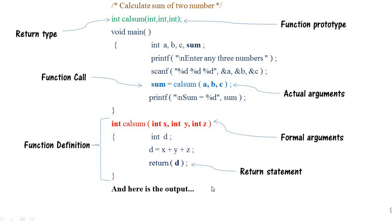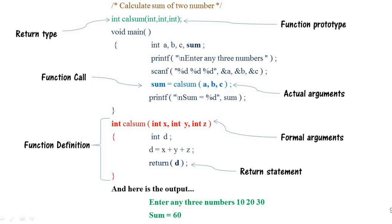Let's see the output. The program prompts: 'Enter any three numbers.' The user enters 10, 20, 30, and the output is: 'Sum is equal to 60.' This statement is printed from the `void main` function. This is the structure of a user-defined function — these are the parts you deal with when working with functions in C. I hope you understood this video. Bye bye.